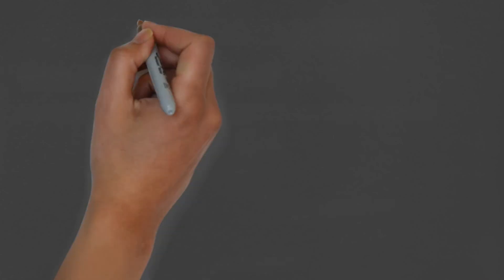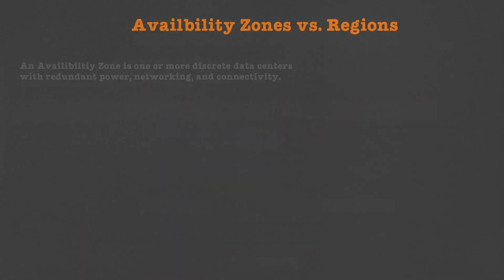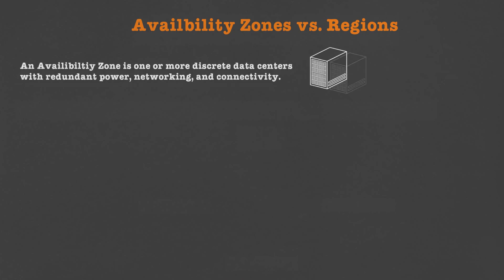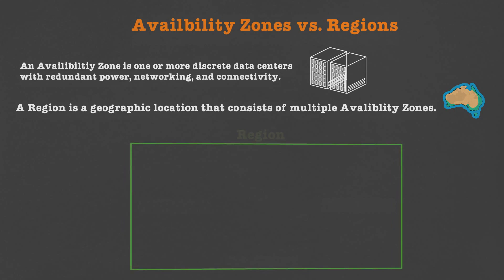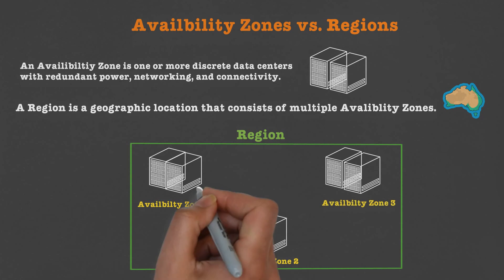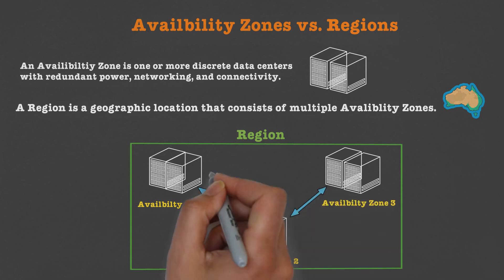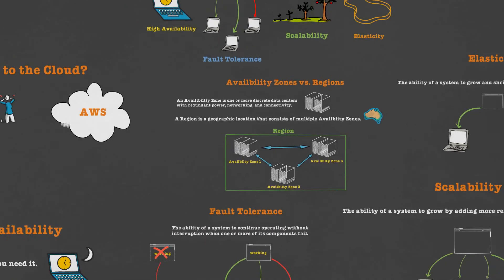Finally, we talk about AWS availability zones and regions. An availability zone consists of one or more discrete data centers that have redundant power, networking, and connectivity. A region is a geographic location that consists of multiple availability zones. And this concludes our summary.